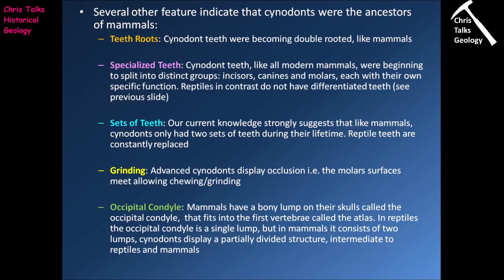There are other features indicating that cynodonts were the ancestors of modern mammals. The first is changes in the tooth root design: cynodont teeth are becoming double rooted, meaning there are at least two bone spurs out of the bottom of the tooth helping to attach it to the jaw — a trait shared by most mammals. In contrast, many reptile teeth are single rooted, with only one spur anchoring the tooth into the jawbone.